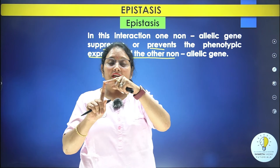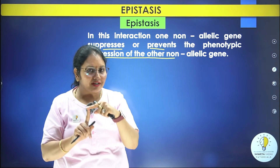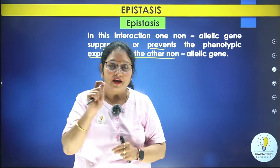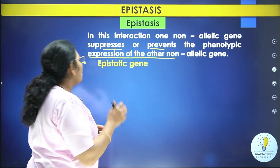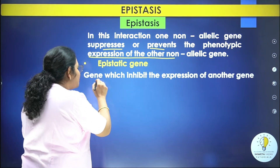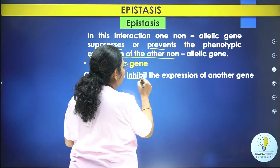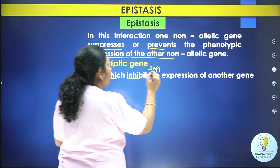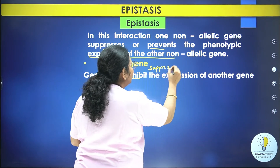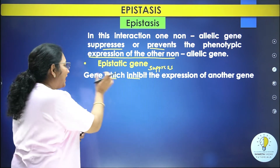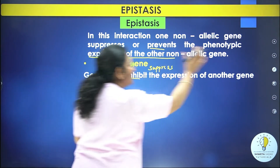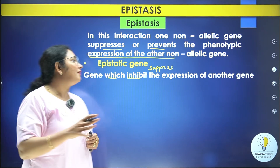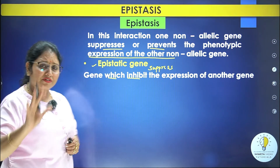The gene that inhibits or suppresses the expression of another gene is called the epistatic gene. The gene which is suppressing or masking the expression of another gene — that is the epistatic gene.